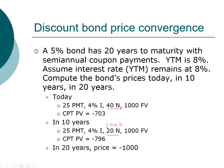An important assumption here: we assume that you have received your coupon payment, and the only payment left is the face value of the bond. So in 20 years, the price has to equal $1,000 by definition. For a discount bond, as time progresses, the price of the bond approaches the face value.